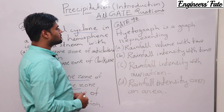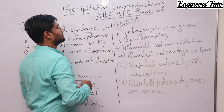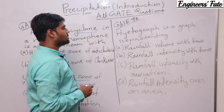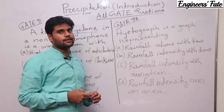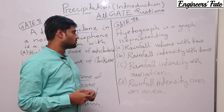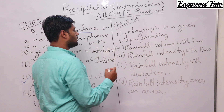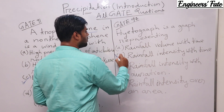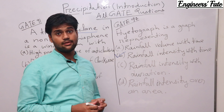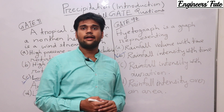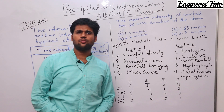The next question was asked in GATE 1997: a hyetograph is a graph representing what? As I told you, a hyetograph is a graph of rainfall intensity with time — it is a graph between rainfall intensity and time. Let's move further.